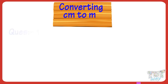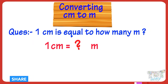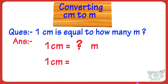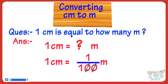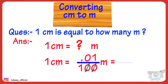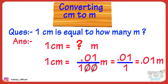1 centimeter is equal to how many meters? 1 centimeter equals 1 divided by 100 meters. We put the decimal after two digits from the right, but since there is only one digit, we put one zero on the left and insert the decimal. So we get 0.01 — 1 centimeter equals 0.01 meters.